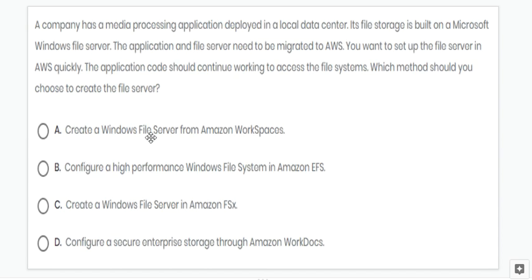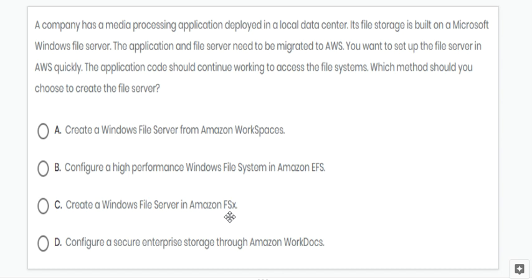Next question: here we need to migrate a Microsoft Windows file server to AWS, so we can create a Windows file server in Amazon FSx. Option C is correct.